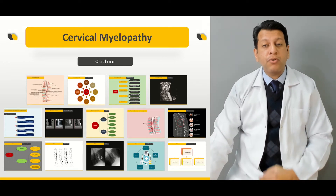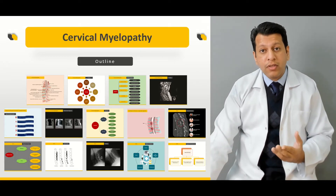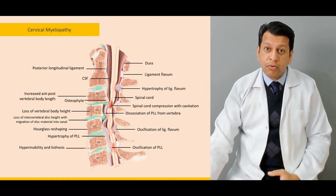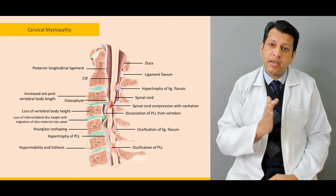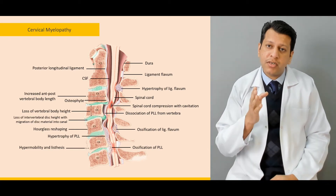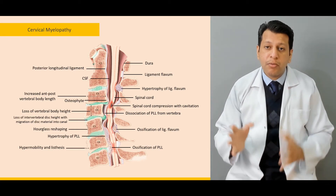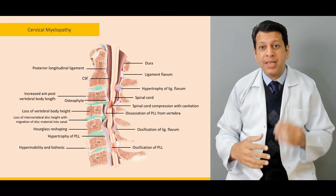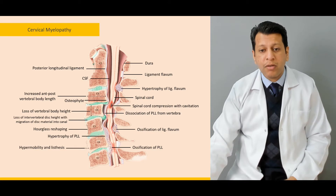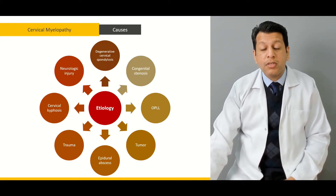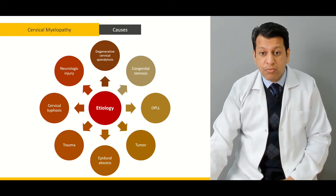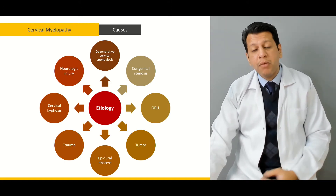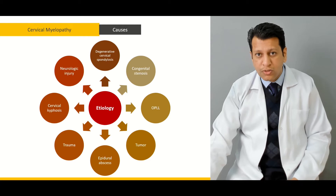We'll be discussing the causes of cervical myelopathy. We'll briefly go through the anatomy of the cervical spine — from the anterior, middle, and posterior columns — and what factors can compress the spinal cord, reduce the space available for the cord, and lead to signs and symptoms of cervical myelopathy. Then we'll discuss the etiology, the most common being degenerative cervical spondylosis, as well as others.